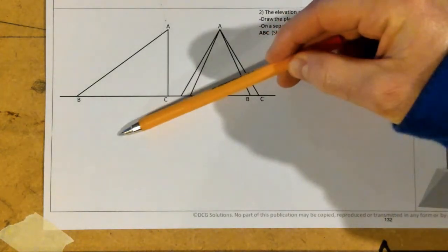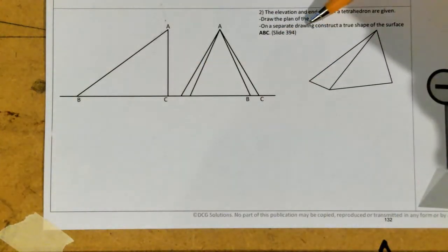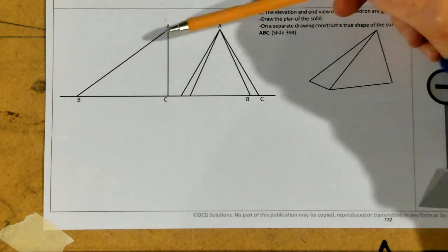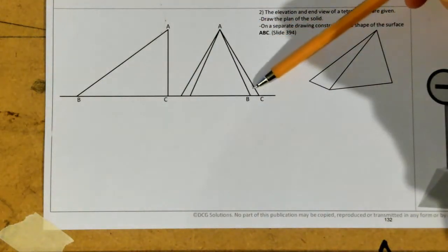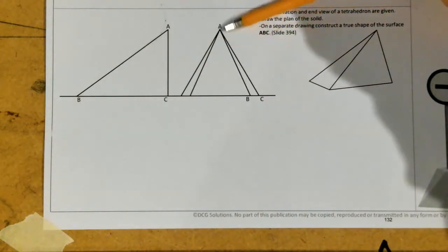So the plan is going to be located down here, and on a separate part of the drawing construct a true shape of the surface A, B, C. So you can see straight away we're given A, we're given C, we're given B, and we're given the three points as well located over here in our end elevation.